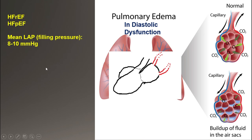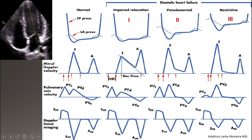The normal mean left atrial pressure, or filling pressure, is about 8 to 10 mmHg. In diastolic dysfunction, it goes higher than this. Changes in diastolic dysfunction follow a specific pattern in Doppler. As you see in this chart, the left column is normal and the other three represent different degrees of diastolic dysfunction.